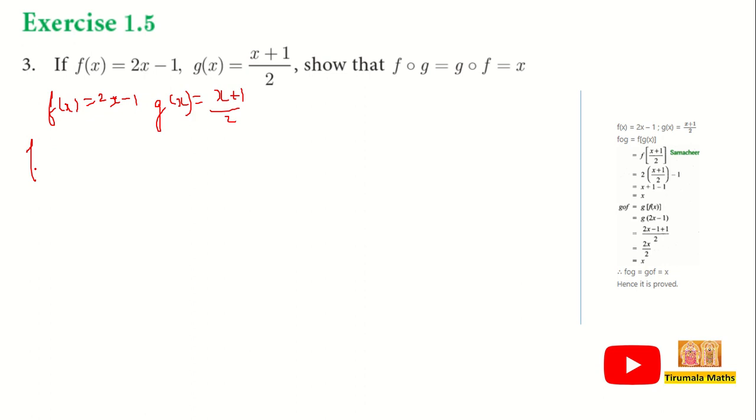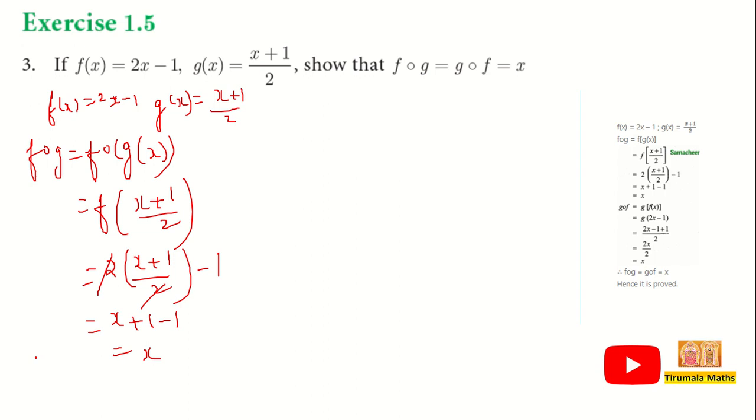So, let us go to the first LHS. f of g is equal to f of g of x. f of g of x where x plus 1 by 2 is substituted. In f of x, x is replaced by x plus 1 by 2. So, 2 times x plus 1 by 2 minus 1. x plus 1 minus 1. Therefore, f of g is equal to x.